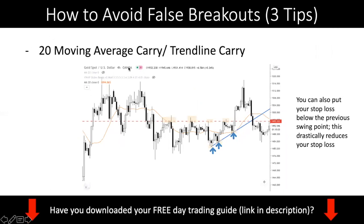The second feature is the 20 moving average carry or trendline carry. Back to the gold example, this case study has both a 20 moving average carry and a trendline carry. I draw a trendline connecting this low to this low, and when I project it out, you can see that price was supported here again. If you look at the moving average — the orange line — you can see there was a form of support being found at the same time. This is what I mean: price is being supported as it bounces off the 20 moving average or trendline just before it hits the resistance, then breaks out.